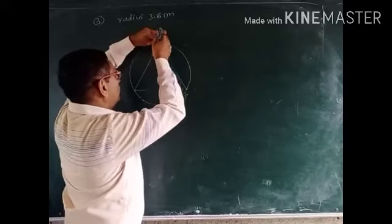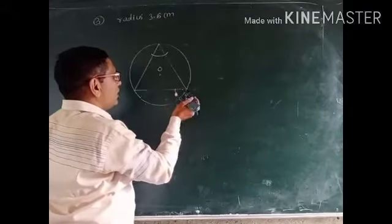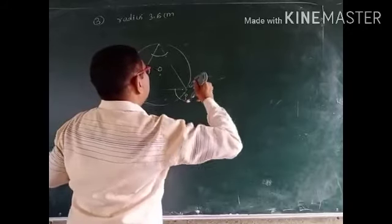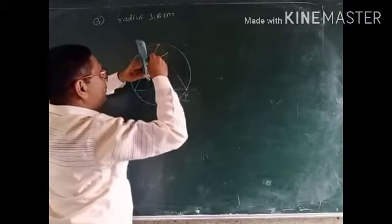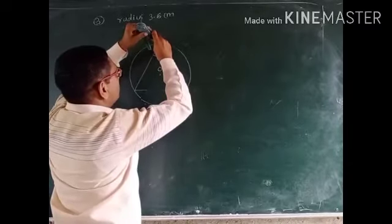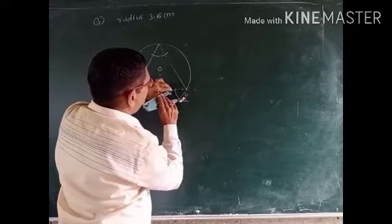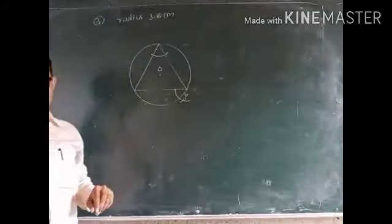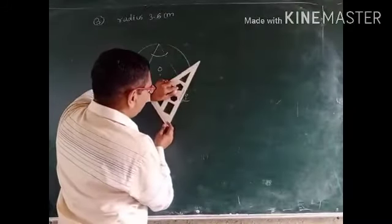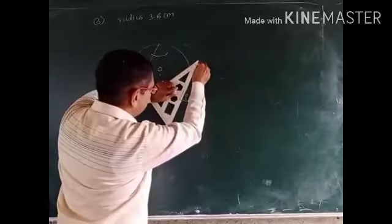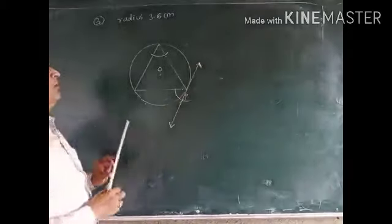We have to draw an angle equal to the inscribed angle at point P. I draw an arc to the given angle, use the same measure, draw another arc, take the distance between those two points, place the steel tip, and cross the previous arc. Joining that point with P gives us the tangent at point P.